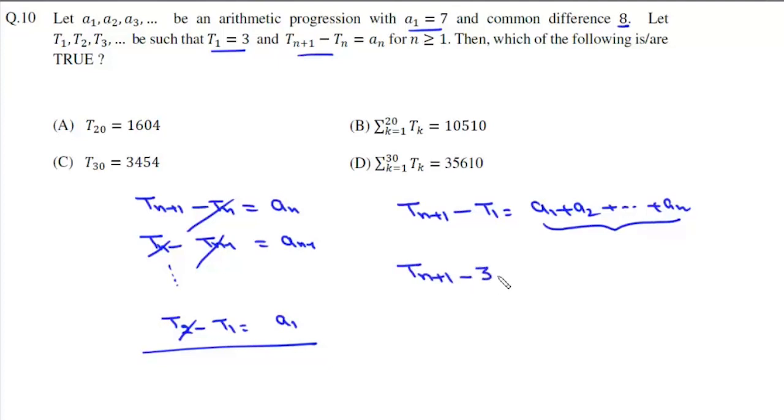Now T₁ is simply 3, and sum of n terms of this AP will be n/2 times (2a + (n-1)d), which is n/2 times (2×7 + (n-1)×8).